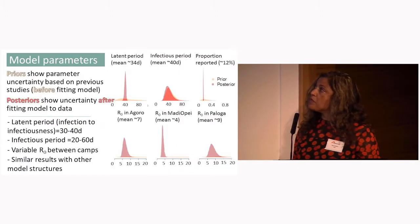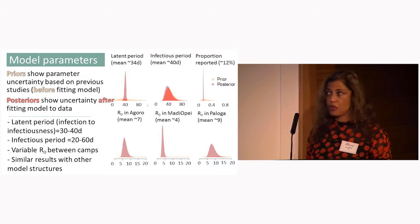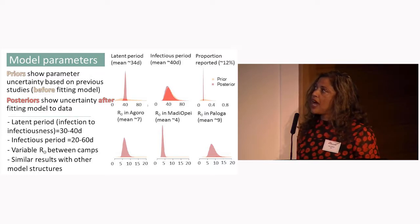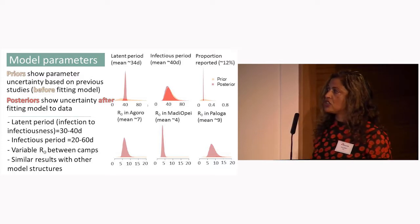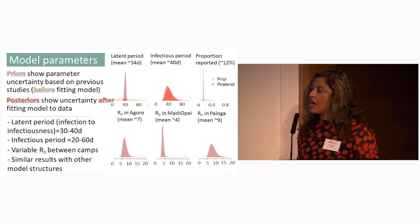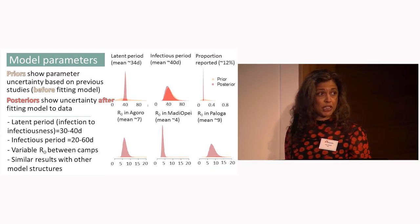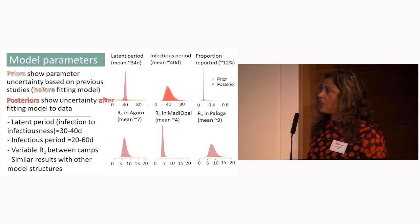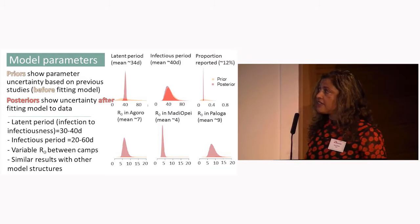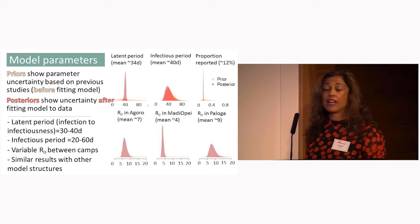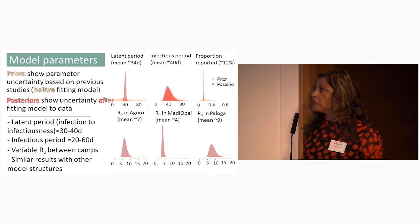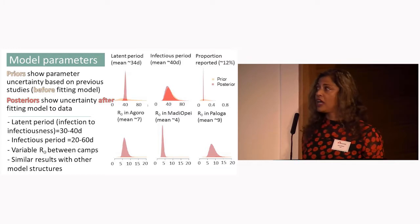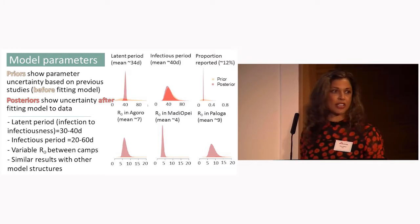I'll skip over the parameter estimation detail in the interest of time, but I want to draw attention to the estimated basic reproduction number, R0, for each outbreak. There is some variability between the three outbreaks, but the values are relatively high — not as high as measles, which is around 15, but higher than Ebola, which is around 2, and roughly equivalent to polio, which is around 8 or 9.